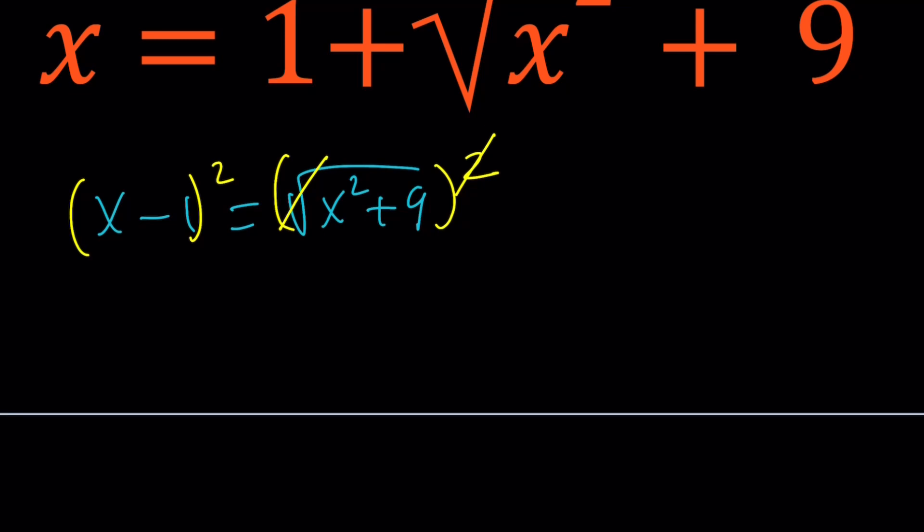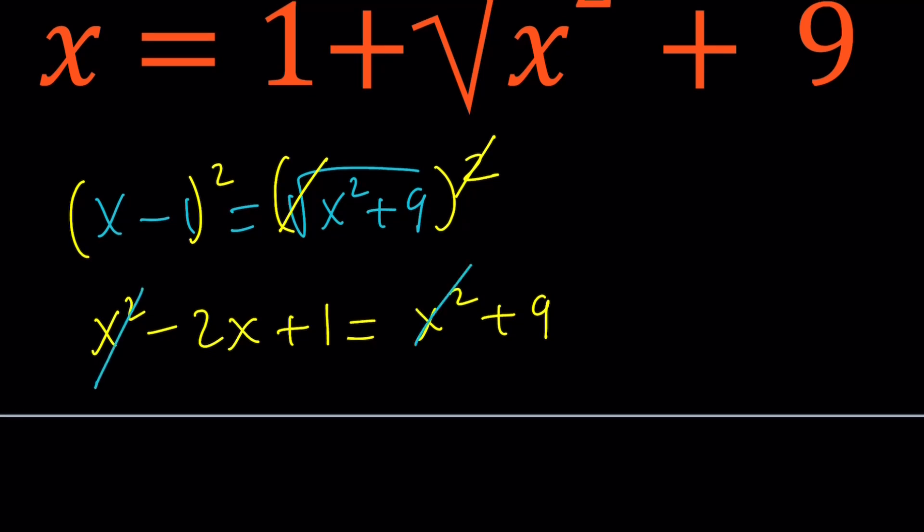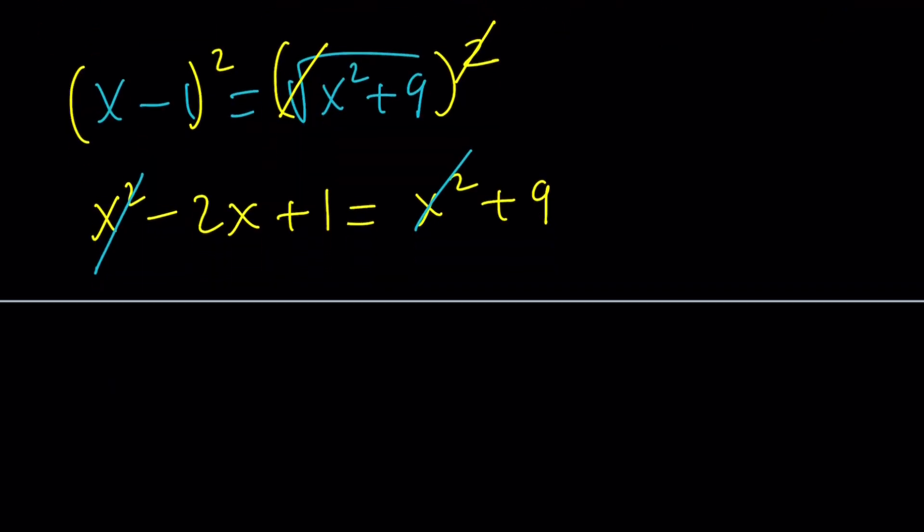And if you expand this, you get x squared minus 2x plus 1 equals x squared plus 9. Nice because we're going to get rid of x squared. So this becomes linear. You can subtract 1, you get 8.